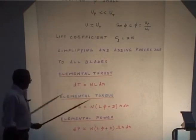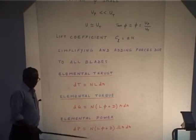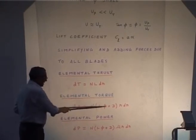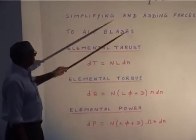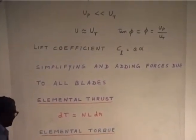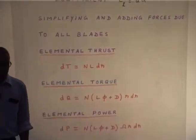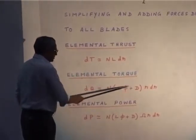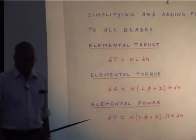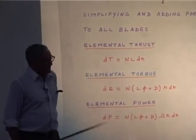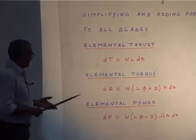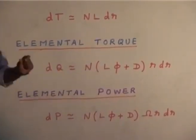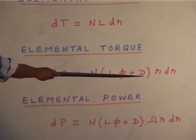We have made all the approximations with the small angle assumption. The elemental torque is: number of blades times L times phi, where phi is the induced angle, and D is the profile drag coefficient. This has two components — one comes due to lift, and another due to the profile drag of the airfoil. The first term is the induced drag and the second is the profile drag.